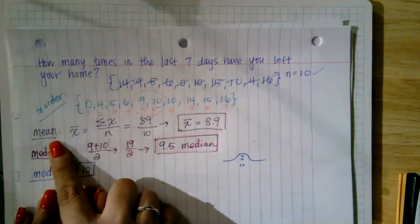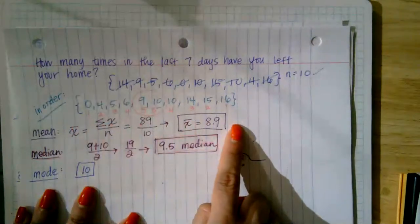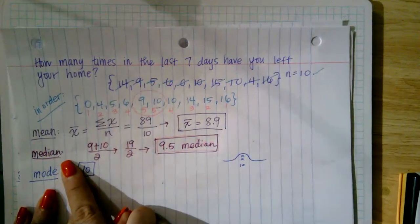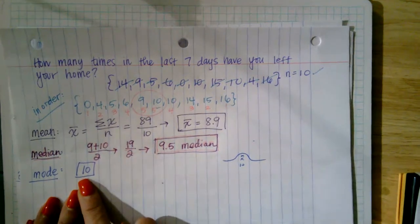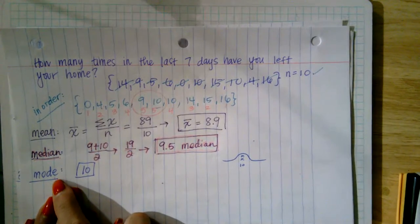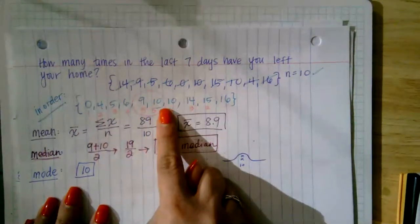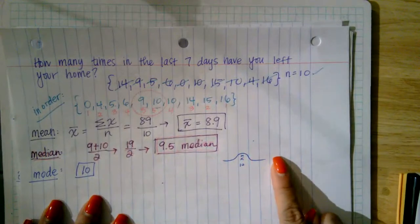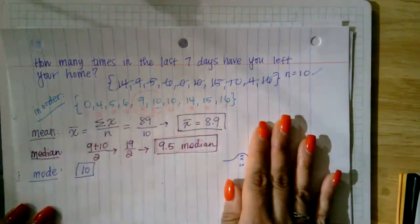Quick crash course: mean is the average — adding all values and dividing by the set number gives 8.9. Median is an analysis of location; with the data in order, my median is 9.5. Mode is the popularity contest — which value appears most. All values appear once except 10, which appears twice, so my mode is 10. Since there's only one mode value, I have a unimodal distribution.